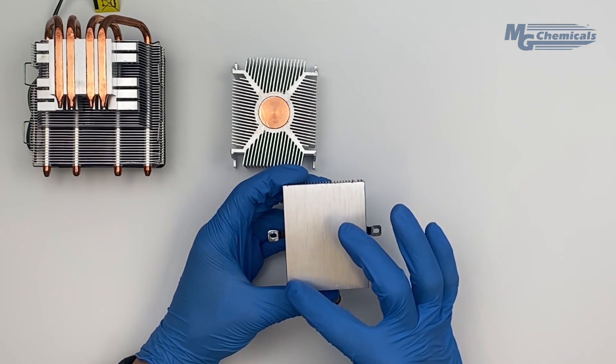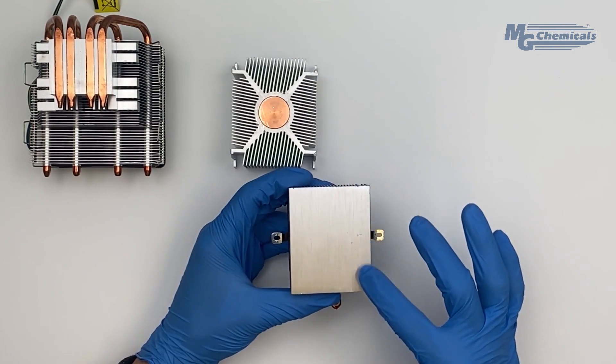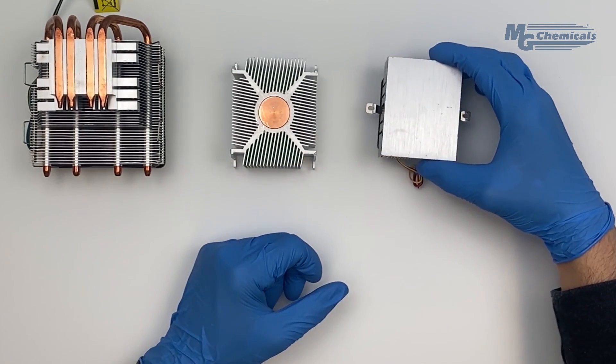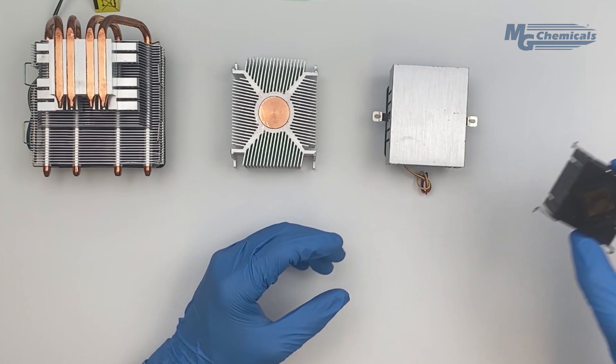This heat sink with its large surface area will work best if you apply the paste in an S pattern or any shape adapted to the perimeter of the heat dissipating element.